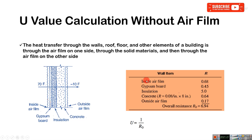Then inside air film R-value is 0.68. This is gypsum board R-value, insulation R-value, concrete R-value, 18-inch concrete, the outside film R-value. The overall resistance R0 equals 6.94. Then 1 divided by R0 gives you U-value.